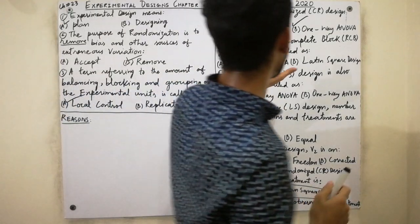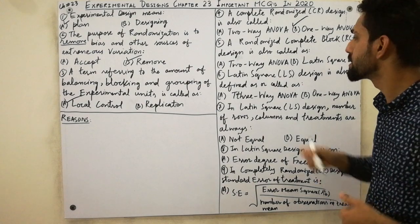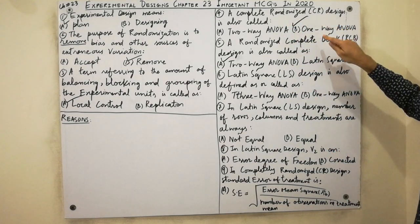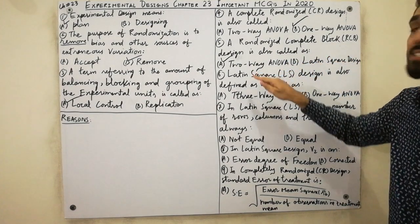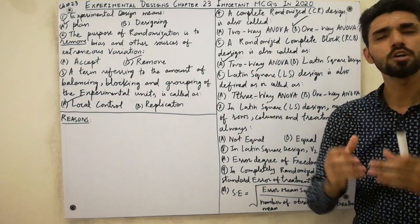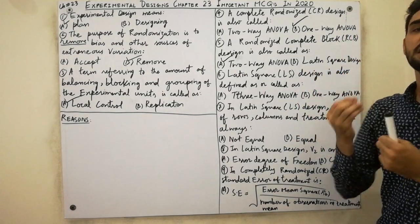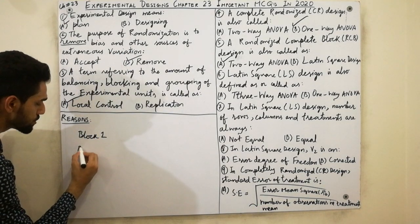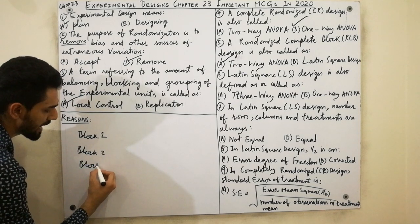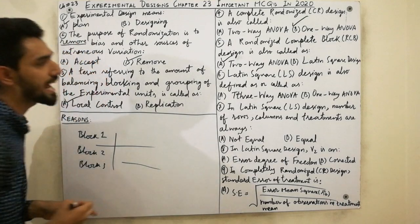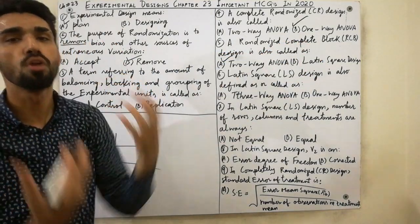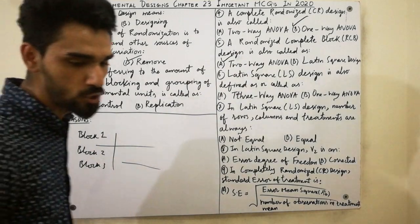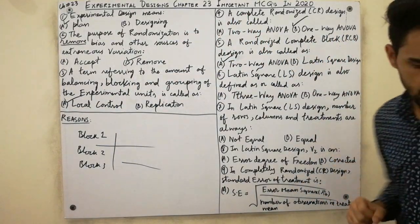The fifth MCQ: a Randomized Complete Block Design is also called two-way ANOVA. Key points to remember — completely randomized design is one-way ANOVA, and randomized complete block design is two-way ANOVA. The difference is that RCBD has blocks — block one, block two, block three, and so on — but the calculation method is the same as two-way ANOVA.